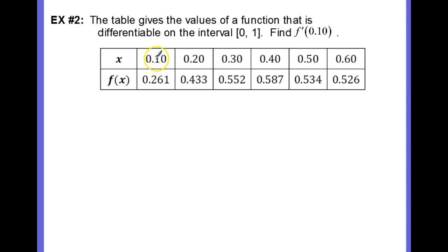In this case, x is in the table, so I don't have any values that are less than 0.10, but I can still use my average rate of change as a means to calculate an approximation for the slope.